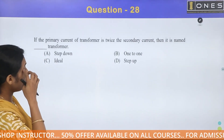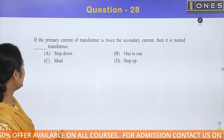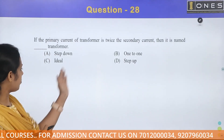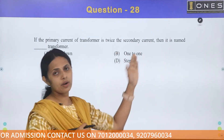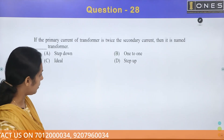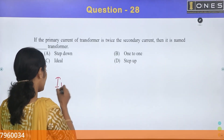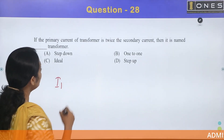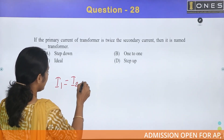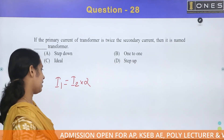If the primary current of a transformer is twice the secondary current, then what type of transformer is it? Primary current I1 is twice the secondary current — I1 = 2 × I2.